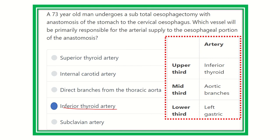Our final answer is the inferior thyroid artery, which gives an esophageal branch responsible for the arterial supply of the cervical esophagus. In summary: the upper third of the esophagus is supplied by the inferior thyroid artery, the mid-third (thoracic part) is supplied directly from the descending thoracic aorta, and the lower part receives branches from the left gastric artery. Thank you all.